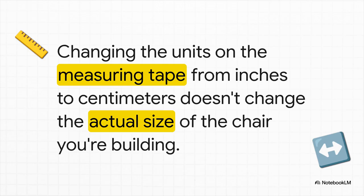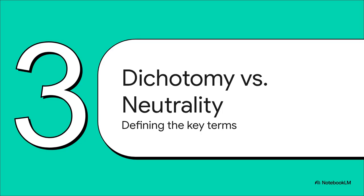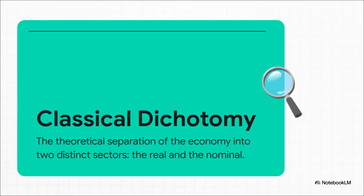So now that we've got that workshop analogy firmly in our minds, let's connect it back to those official economic terms from the exam question. What is the classical dichotomy? It's basically the formal name for that separation we just talked about — the theory that says the real world of production, our workshop, and the nominal world of money, our measuring tape, are two fundamentally separate things. Real variables, like how many chairs you make, are driven by real factors. And nominal variables, like the price of those chairs, are driven by money stuff, like how much currency is floating around.